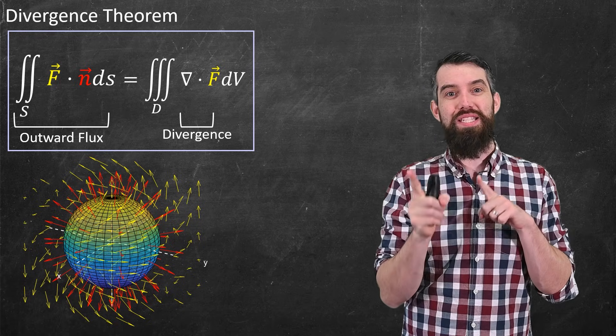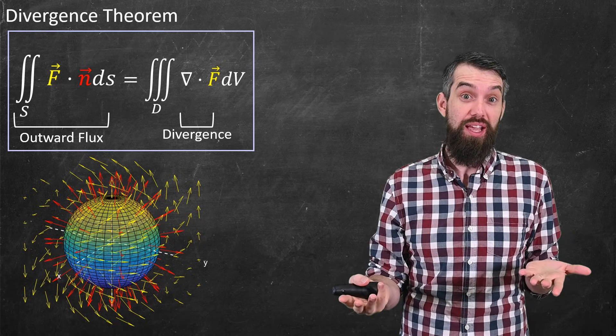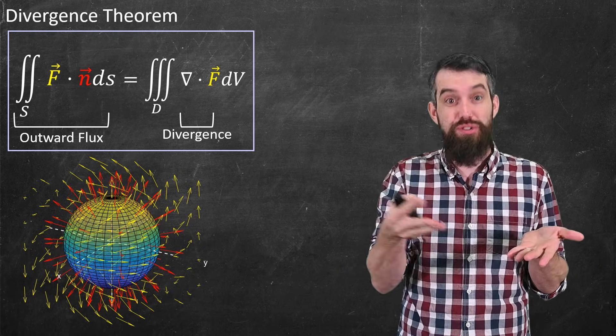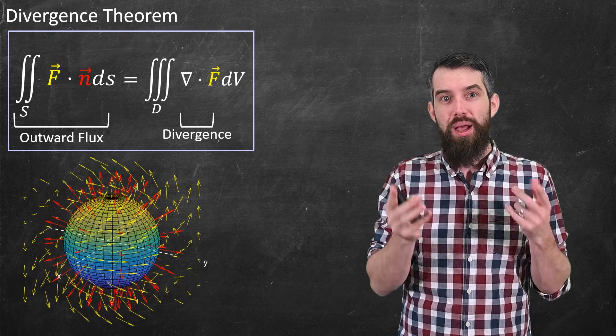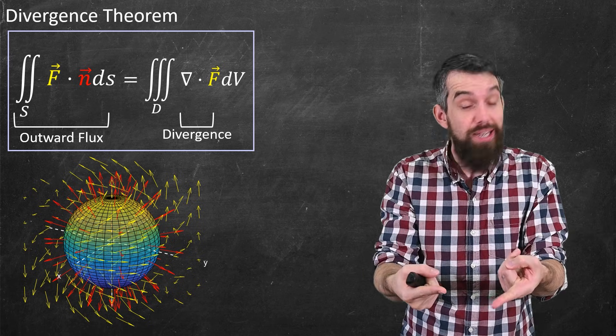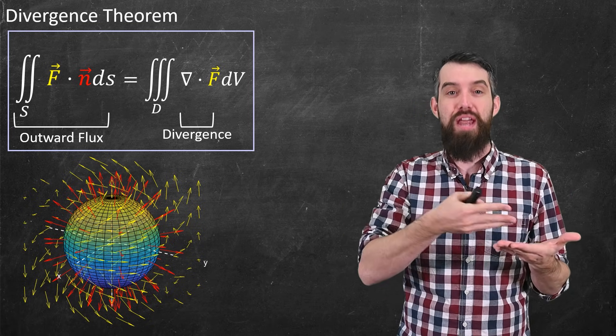And then the right-hand side also changes. The integrand is actually the same thing, it's just the divergence. Now the divergence would be the sum of three things versus the sum of two things, but still just the divergence. But now the interior of a surface is a volume. And so it is a triple integral with respect to a volume of the divergence.